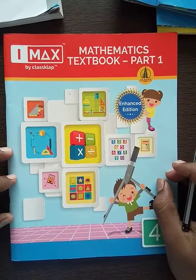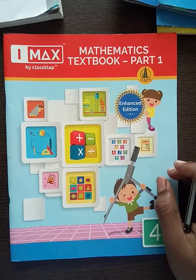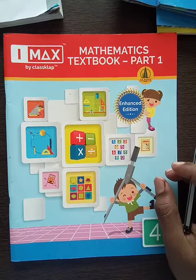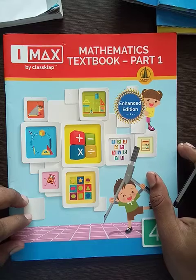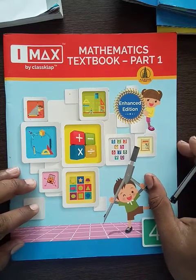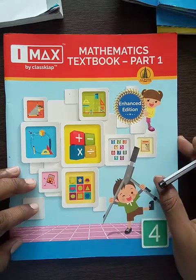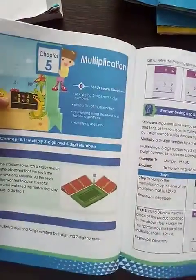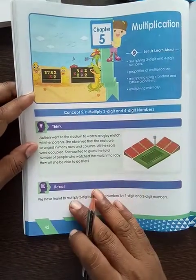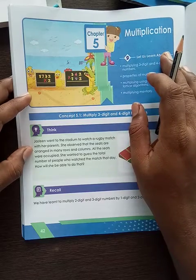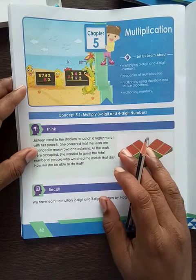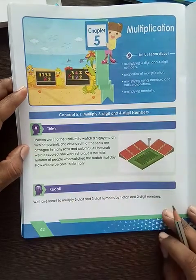Hello students, good afternoon everyone. Let us learn mathematics — everyone must open Mathematics Textbook Part One. I hope you all completed your given homework properly in your mathematics notebook. Now it's time to study a new chapter. Everyone must open page number 42. Today we are learning Chapter Number 5: Multiplication. You already know about multiplication, but today we will learn some different multiplications. Before learning, let us recall some examples.